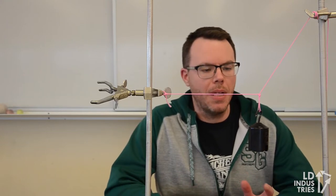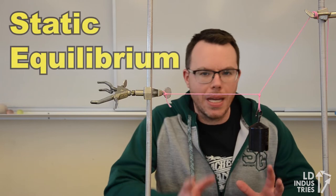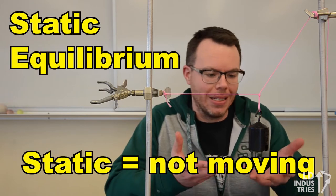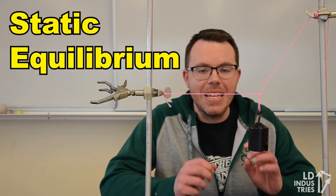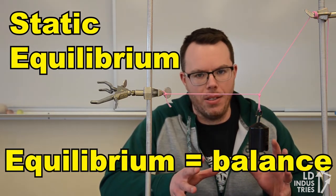Let's talk about static equilibrium. I've got a mass here supported by two strings. We say this is static equilibrium because it's static, it's not moving, it's at rest, and equilibrium because all of the forces acting on that mass are balanced.